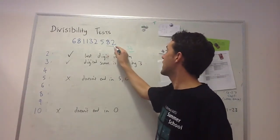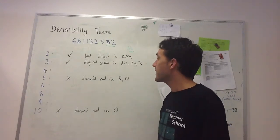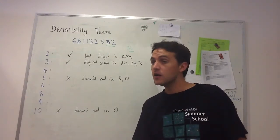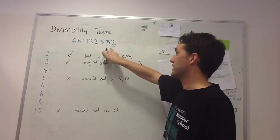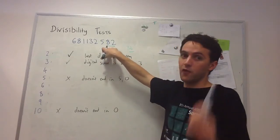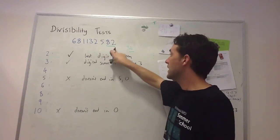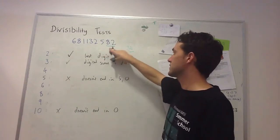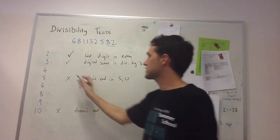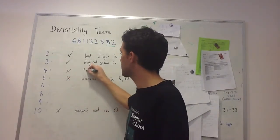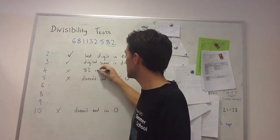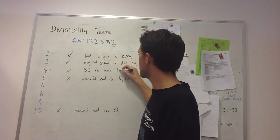82 is not divisible by 4 because 4 goes evenly into 80 (20 times 4 is 80), and the next multiple would be 84. Therefore, it's not divisible by 4.